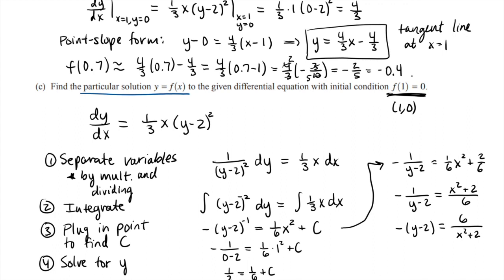And I can multiply by that negative to the other side: (y - 2) equals negative 6/(x² + 2). And finally add that 2 across, so I get y equals 2 minus 6/(x² + 2). And that should be my final answer.